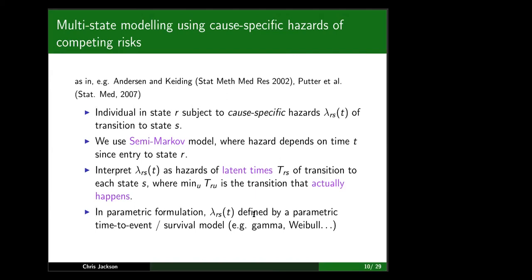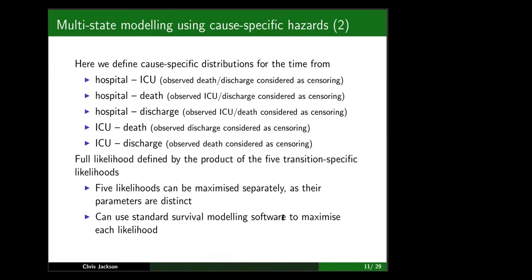To complete this model you have to define a parametric distribution for the hazard function. In this specific application we have five different hazard functions to estimate, corresponding to five different transitions: three competing events following hospital admission — hospital to ICU, hospital to death, and discharge without getting to ICU — and for people who have reached ICU, competing risks of death and discharge.